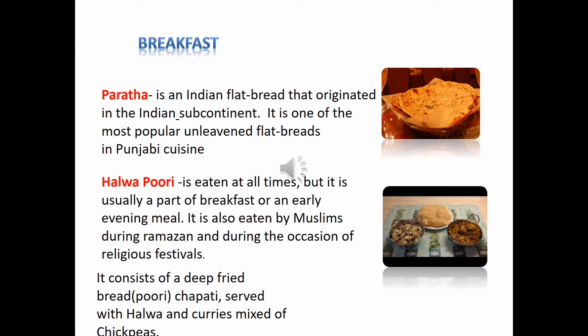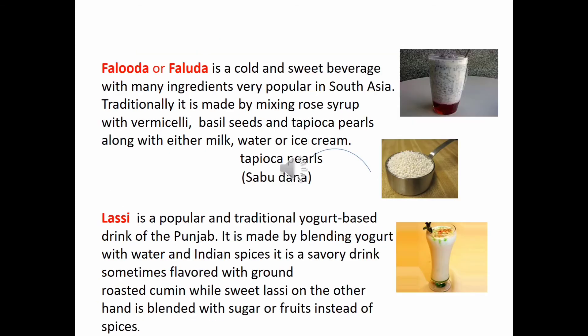Now paratha. Varieties of parathas are consumed by Punjabi people, especially during breakfast, due to the abundance of fresh vegetables available particularly in winter. People make varieties of stuffed paratha and enjoy them at breakfast — aloo paratha, gobi paratha, mooli paratha, and many more. Then halwa puri — people eat it at all times, and especially in remote areas, they make halwa puri during festivals and occasions. It is a tradition in Punjab.